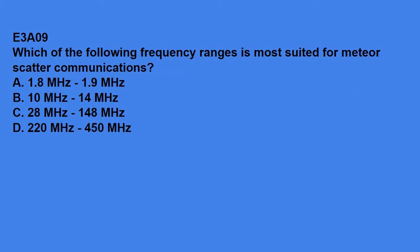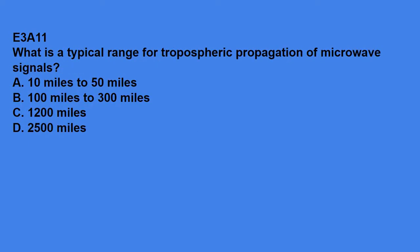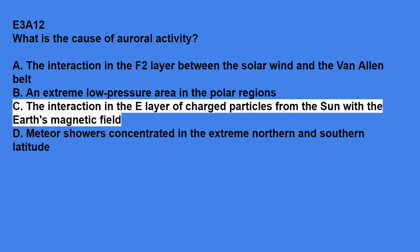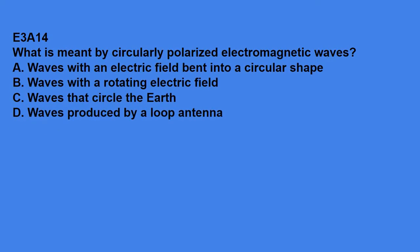E3A09, which of the following frequency ranges is most suited for meteor scatter communications? The answer is 28 MHz to 148 MHz. E3A10, which type of atmospheric structure can create a path for microwave propagation? The answer is temperature inversion. E3A11 says, what is a typical range for tropospheric propagation of microwave signals? The answer is 100 miles to 300 miles. E3A12, what is the cause of auroral activity? The answer is the interaction in the E layer of charged particles from the sun with the earth's magnetic field. E3A13, which of these emission modes is best for auroral propagation? The answer is CW. E3A14, what is meant by circularly polarized electromagnetic waves? Waves with a rotating electric field.